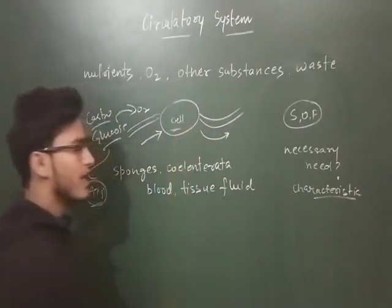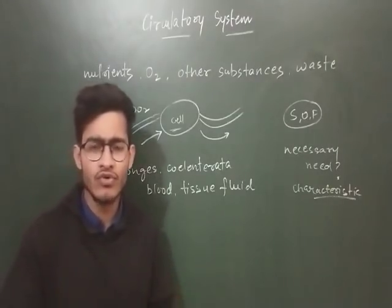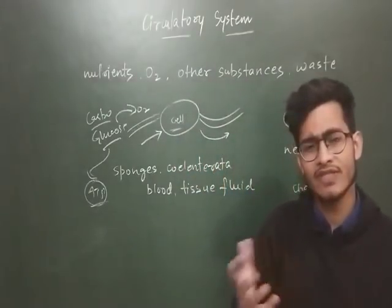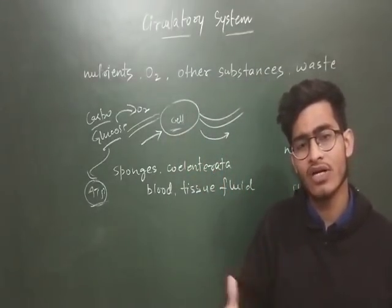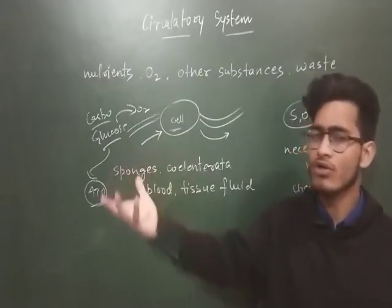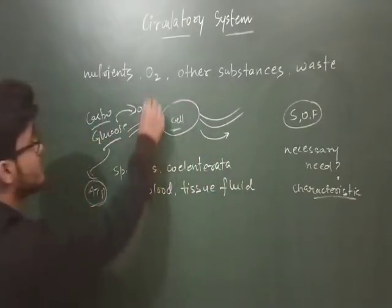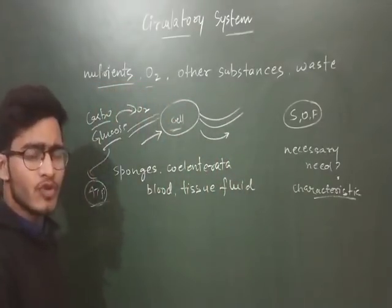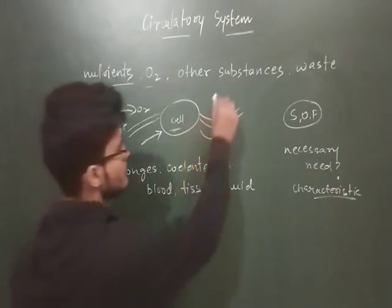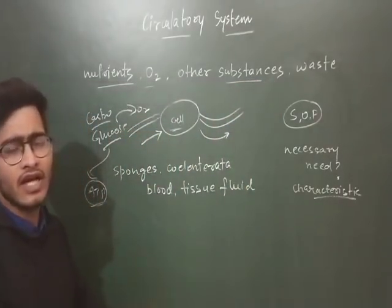So the cell requires oxygen. The cell requires different kinds of nutrients and food. There are some cells which do not have all the important things they require, so they basically need all those things through a transport mechanism. The oxygen and nutrients can be transported to a cell, along with other important substances.